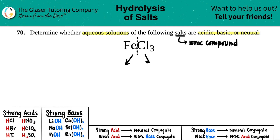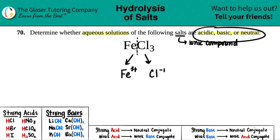When we split those up, we have iron — and the charges aren't really necessary to answer this correctly, but I'll include them — iron is 3+ and chlorine is 1−. Now we're getting closer to determining whether the solution is acidic, basic, or neutral.